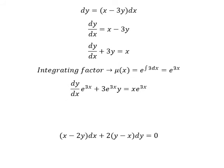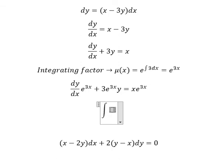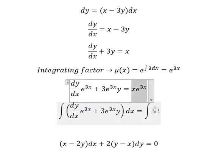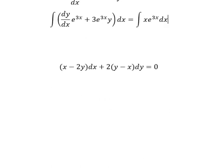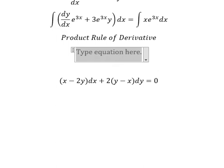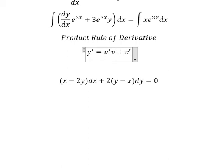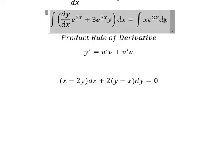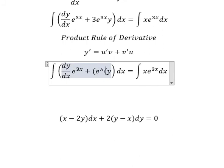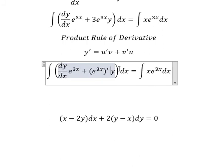Next, we put the integral for both sides. Then we apply the product rule of derivative. That means the first derivative of y equals the first derivative of u multiplied by v, plus the first derivative of v multiplied by u. If we look carefully, this is the first derivative of u multiplied by v, and this is the first derivative of v multiplied by u.